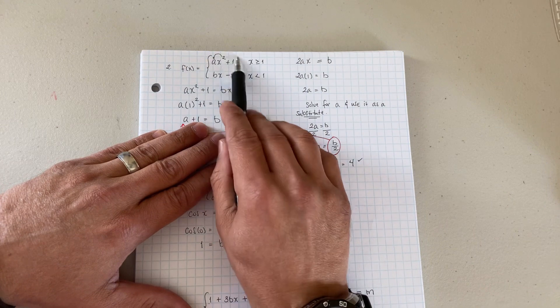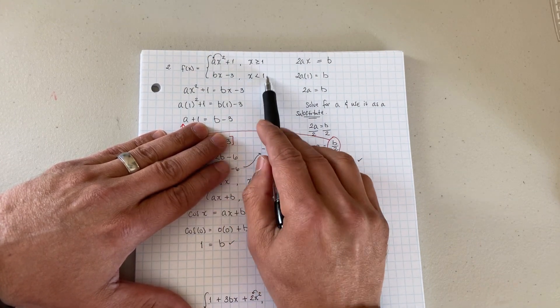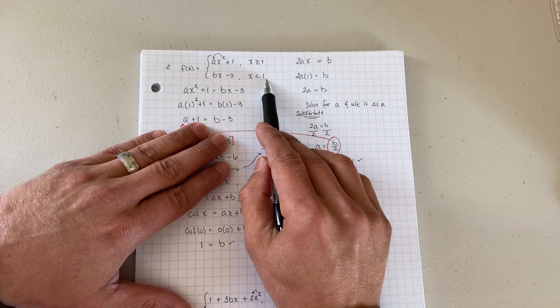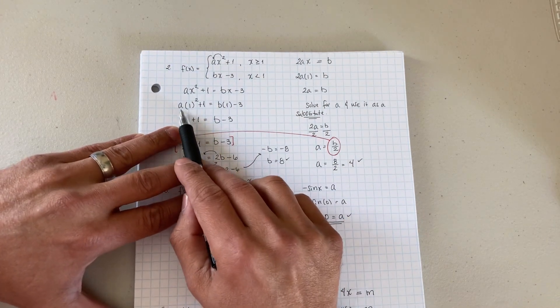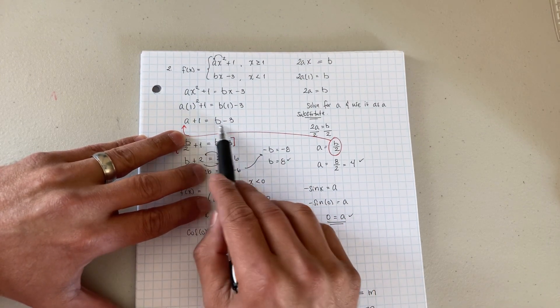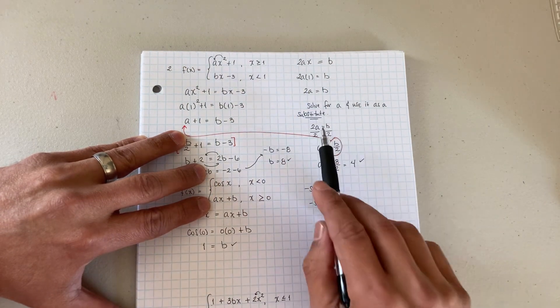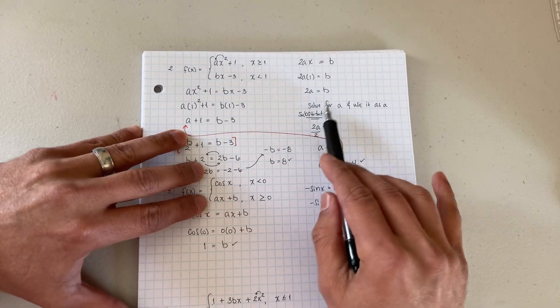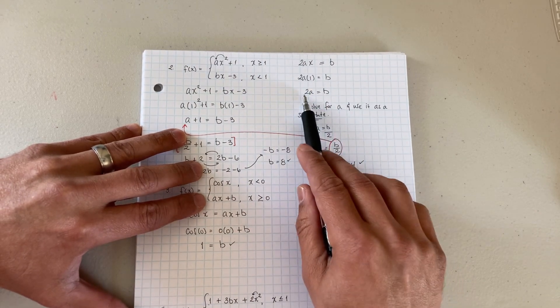The limit from the left is going to equal the limit from the right and we're going to plug in this value of 1 which is in question. And when we do that we get a plus 1 equals b minus 3. Well see now I have this here with two unknowns and this equation over here. What you can do is solve for a for one value and use it as a substitute.